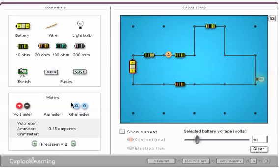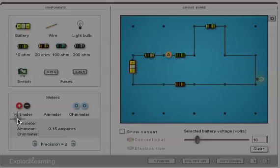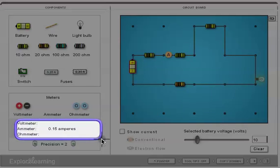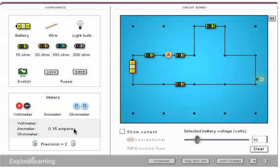Now it's reading the current, and I can see the current over here on this screen. It says voltmeter, ammeter, and ohmmeter, and it's telling me that the ammeter is 0.15 amperes. So that's the current running through that piece. If I want to find the current somewhere else, I can take it and drag it somewhere else. If I want to do that, it finds the current through that little piece, which happens to be the same in this case.